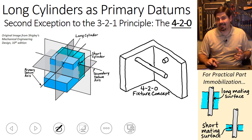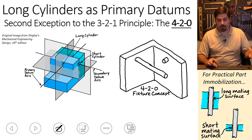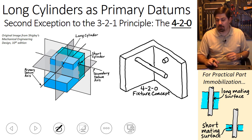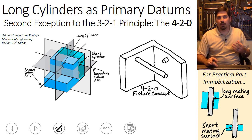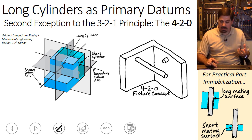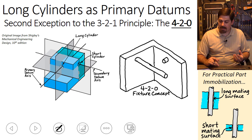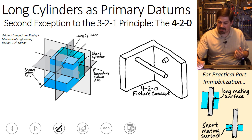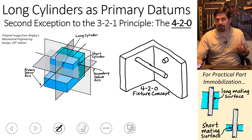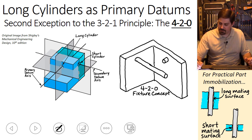Here's a second exception to the 3-2-1 rule, called the 4-2-0 rule. Again, we start with a primary datum axis through the part, but in this version the part has been modified slightly — a small chunk has been added to the back.